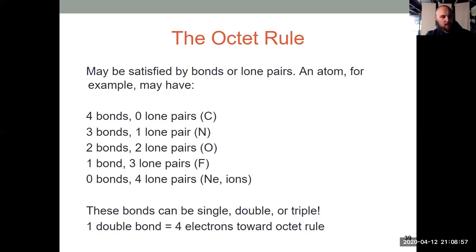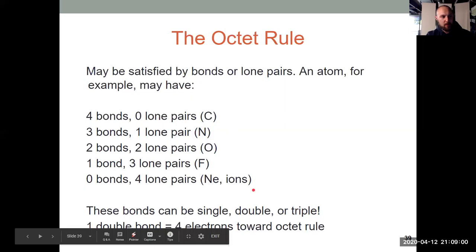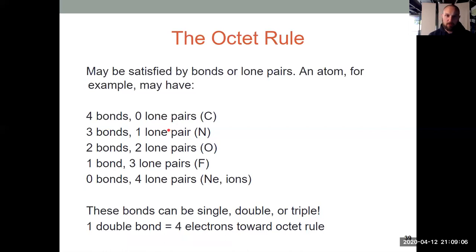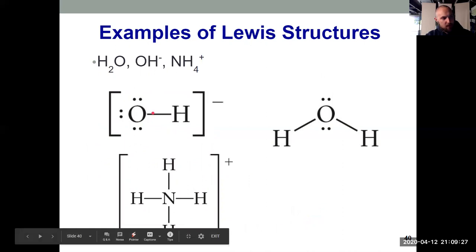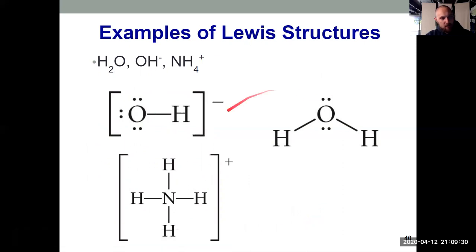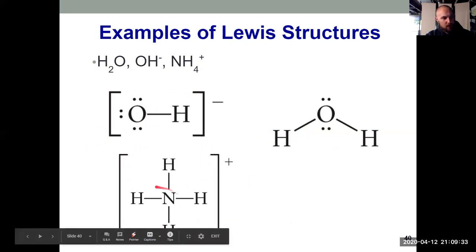Anything below these elements follows the same activity — phosphorus, below nitrogen, also typically likes to form three bonds and have one lone pair. Here we see examples of Lewis structures: H2O, OH⁻ (hydroxide), and NH4⁺ (ammonium). Each satisfies the octet rule for everything other than hydrogen. Oxygen can have three lone pairs and one bond, two lone pairs and two bonds, or nitrogen can have four bonds surrounding it — all different ways to satisfy the octet rule.